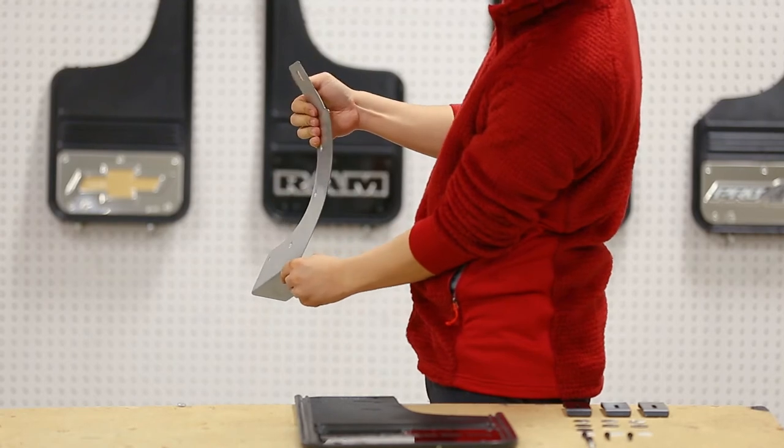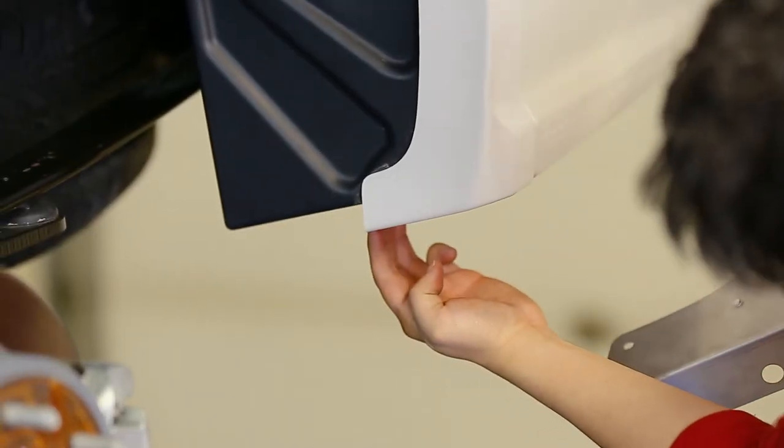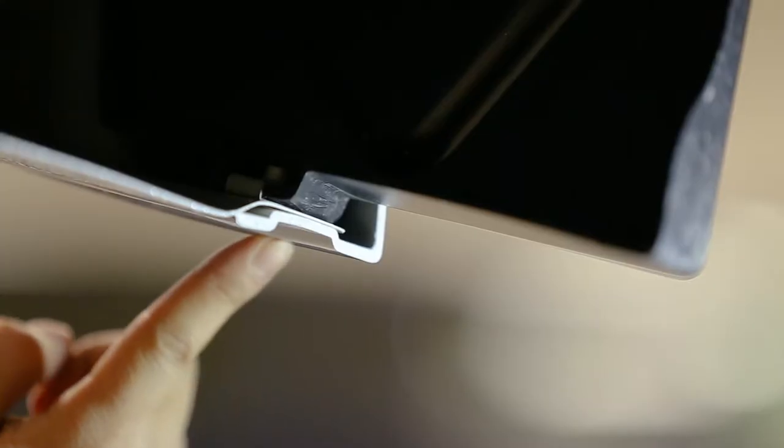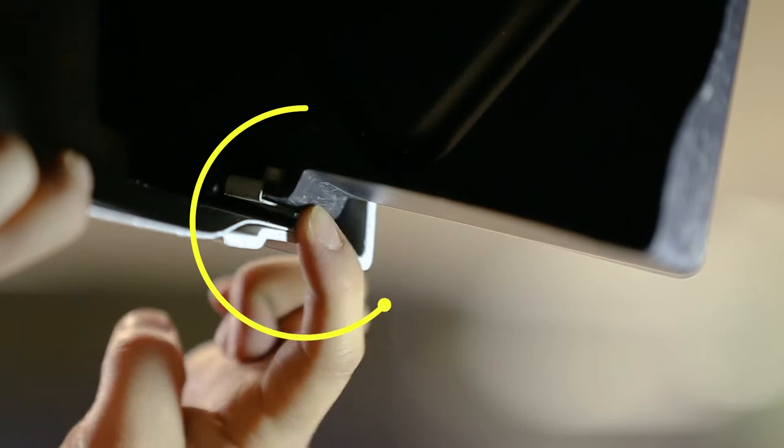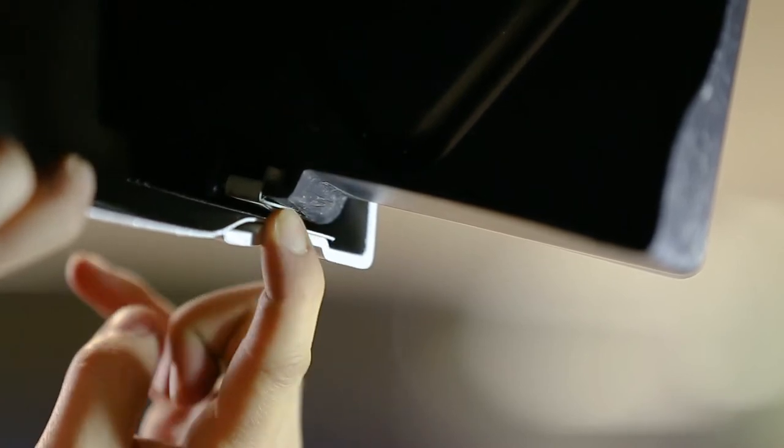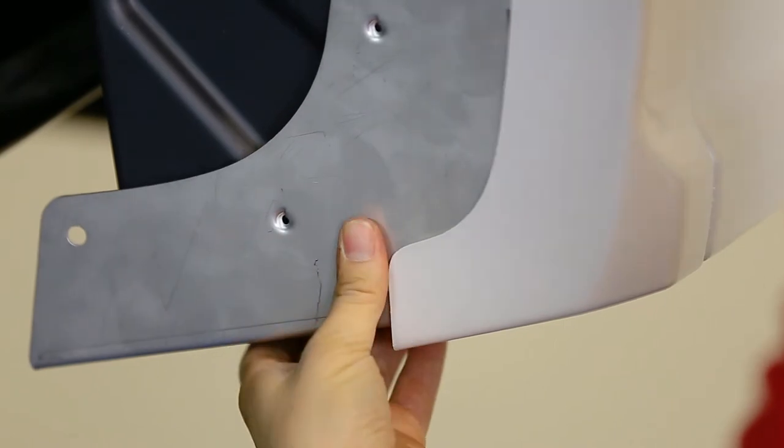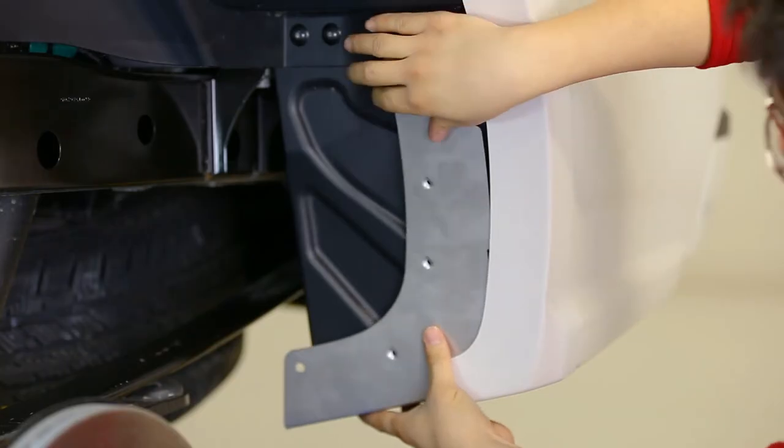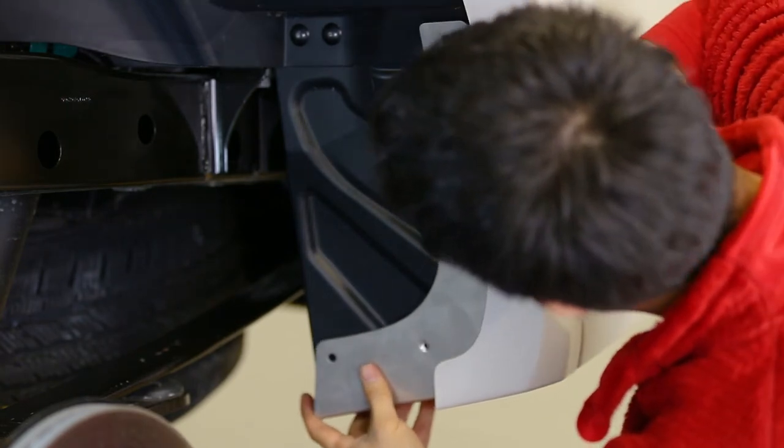Then insert the bracket in between the fender and liner. Begin with the lower tab of the bracket and insert it so it fits between the inner liner and the truck body as shown. Then slide the bracket into place so that the top bracket hole lines up with the factory push pin hole removed earlier.